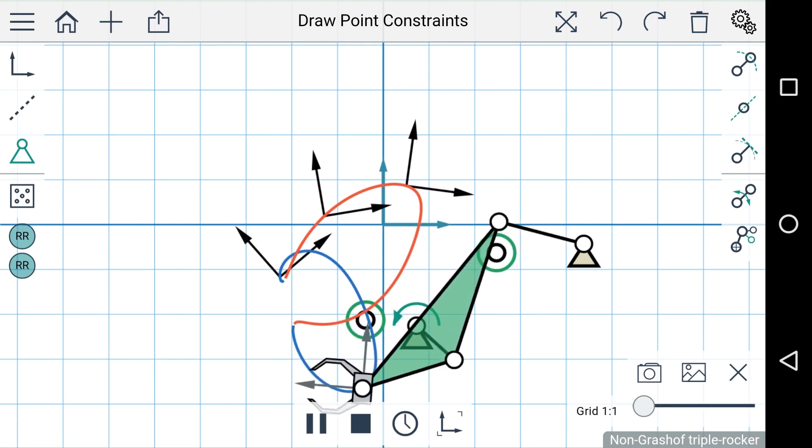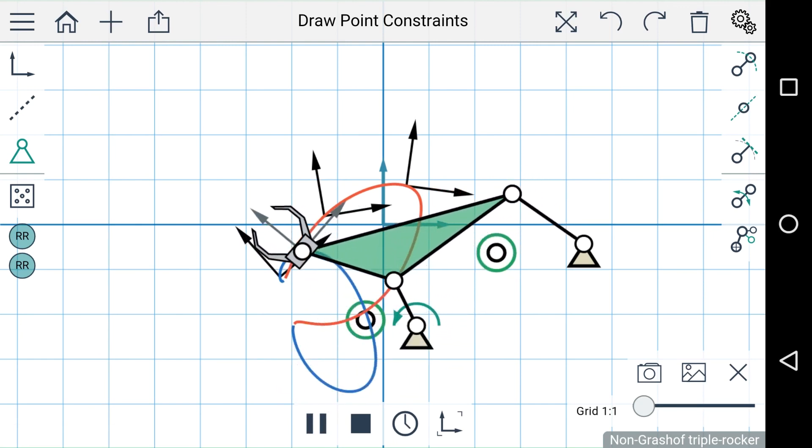So that's how you can synthesize four bar linkages using three, four, or five positions using MotionGen. We'll see you next time.